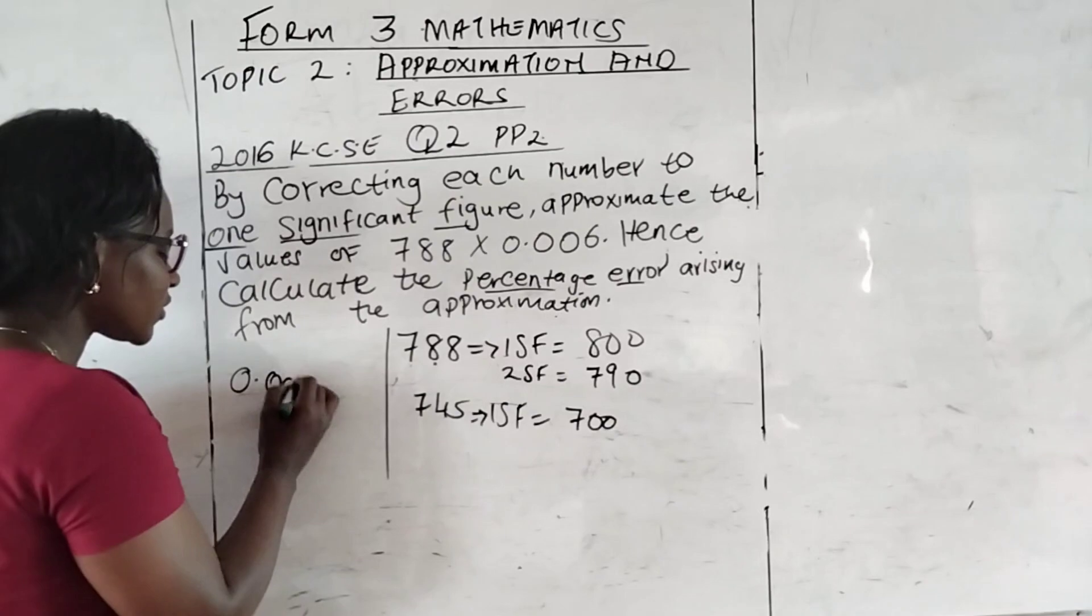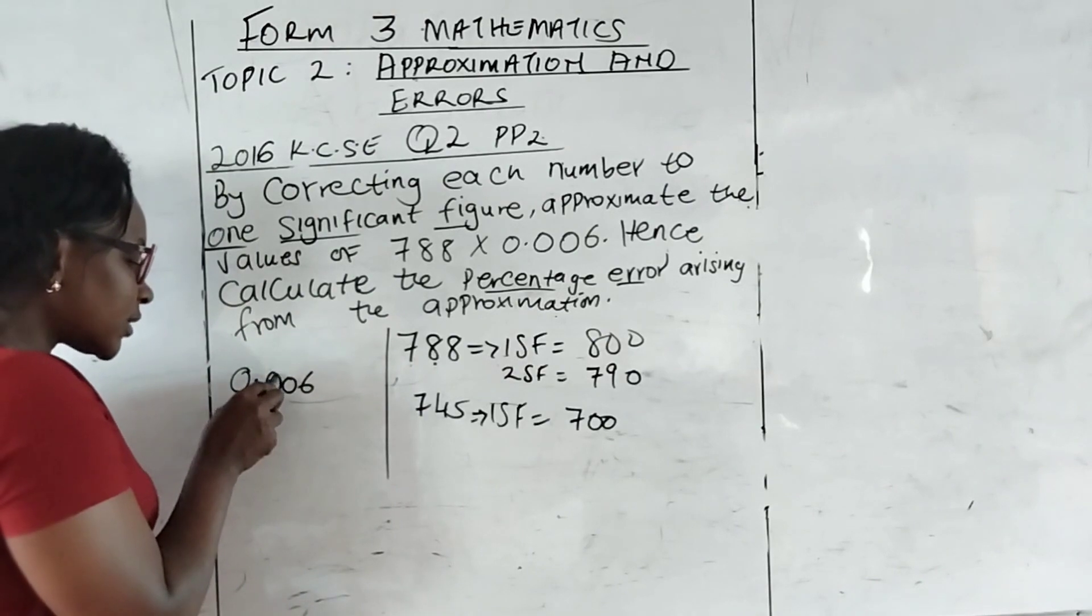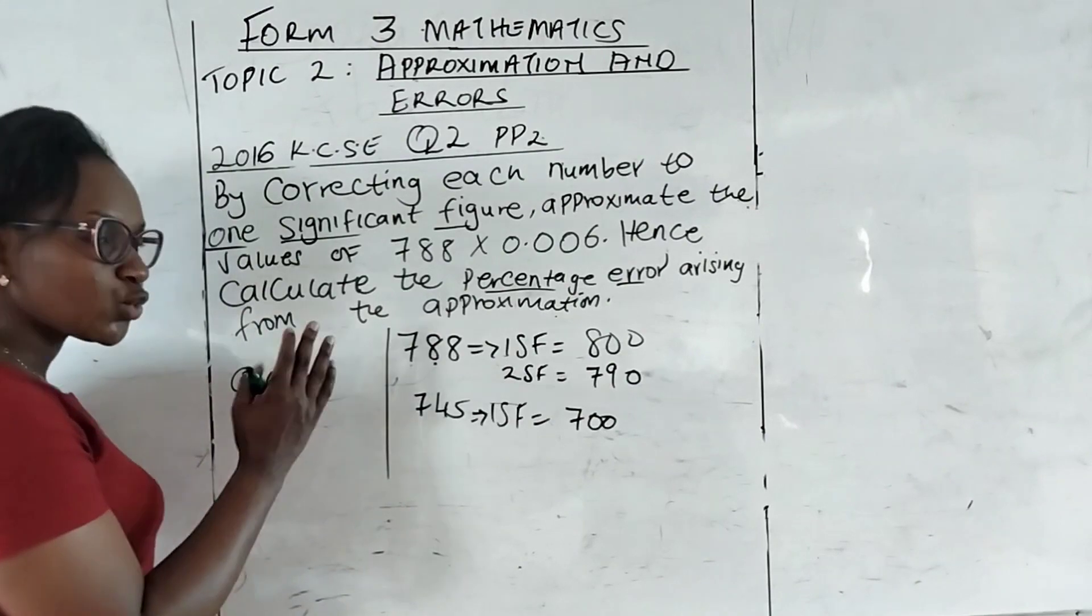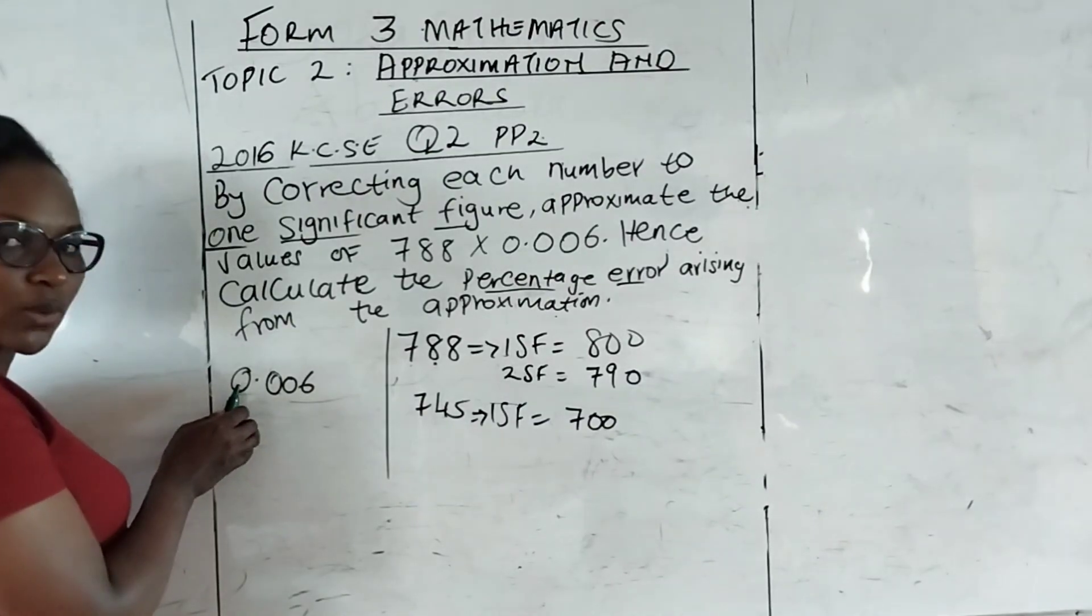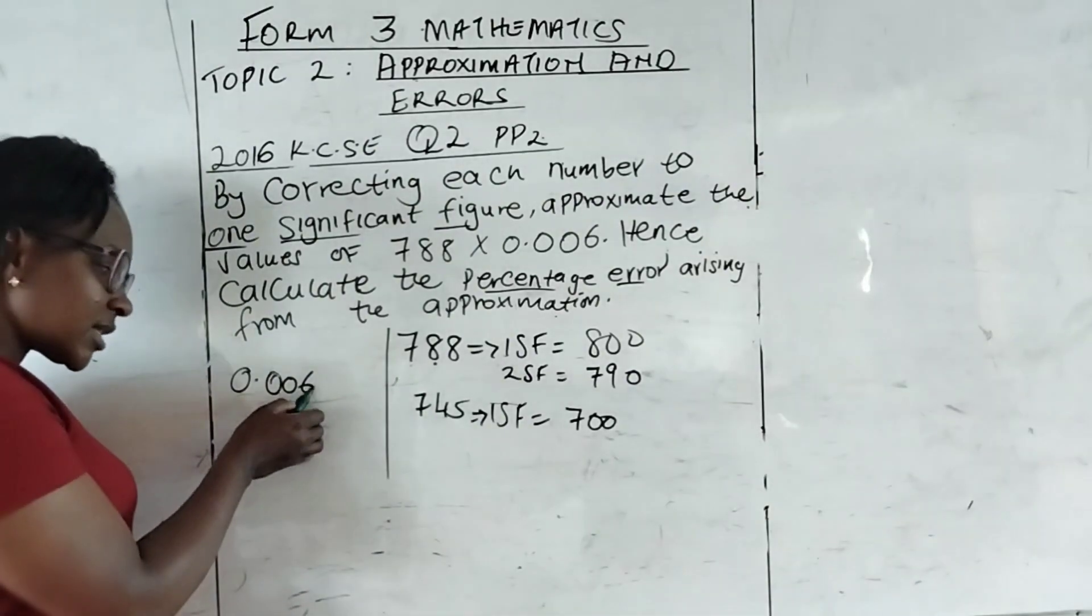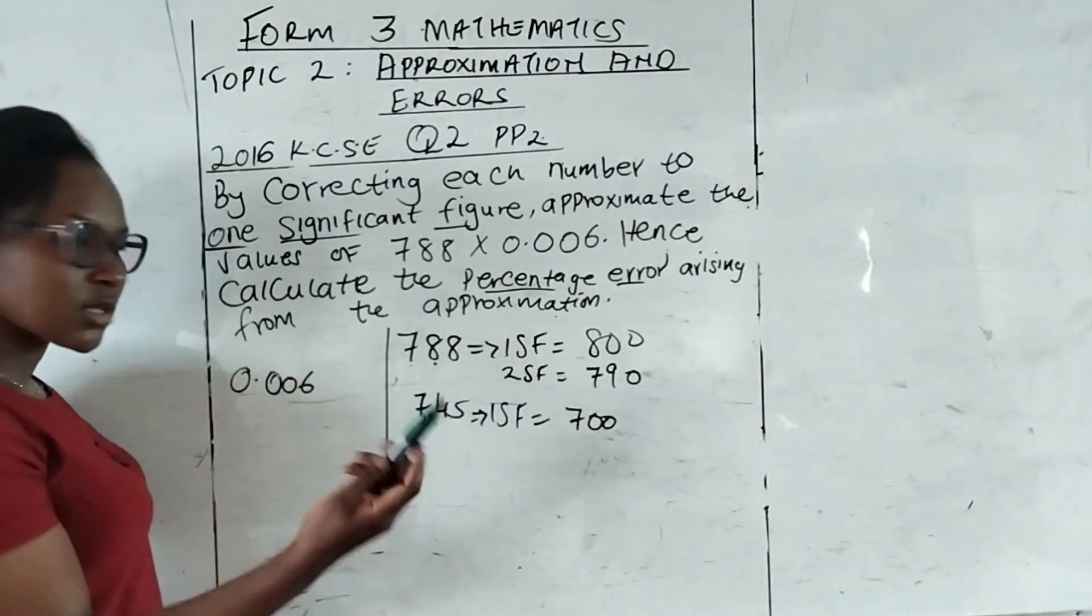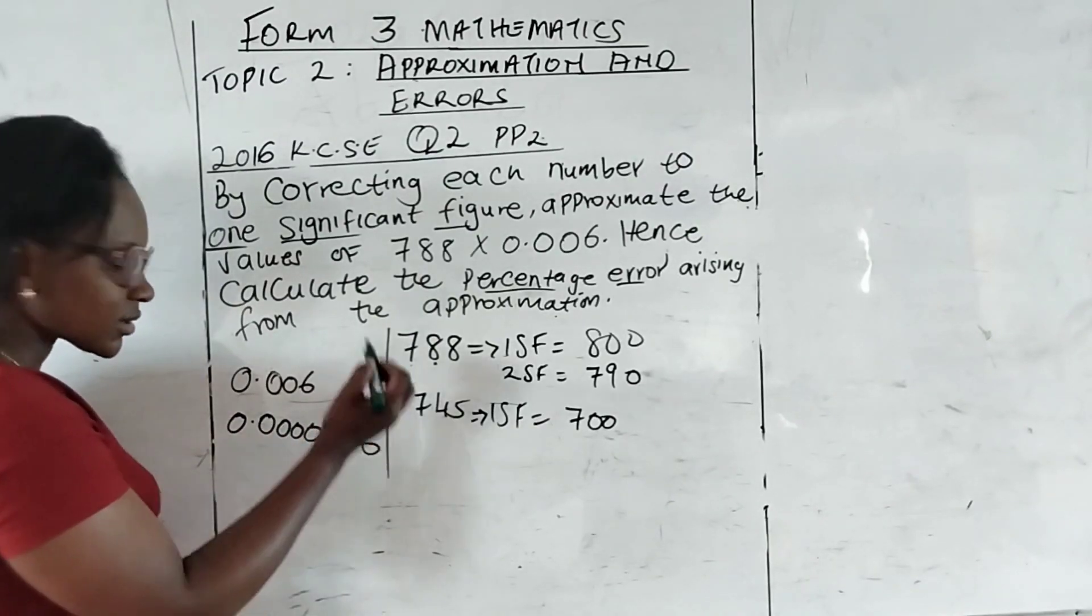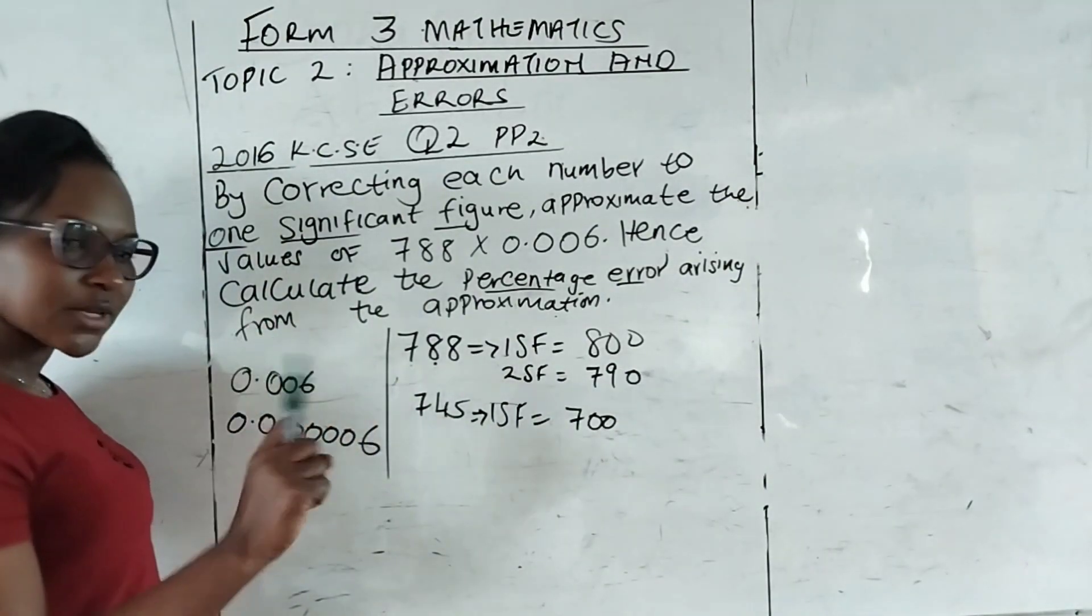What about when we have 0.006 to one significant figure? We start calculating to one significant figure to where we have our digits ranging between 1 and 9. Right here now, we cannot have this one to be our significant figure. Where we have 6, that is where now we start calculating our significant figures. Even if we have so many zeros, for example, 0.000006, we still start calculating our significant figures from 6.